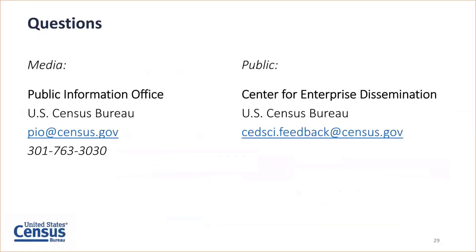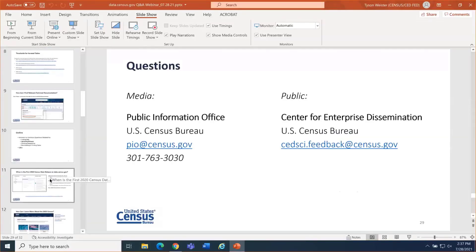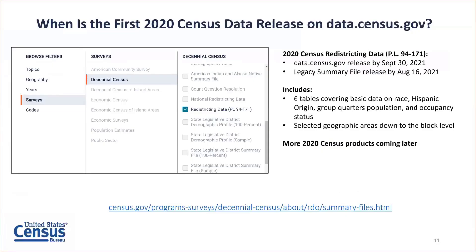Clarification on redistricting data release timing: the data will be released in legacy summary file format by August 16th. The same data will then be released on data.census.gov to make it easier for everyday users to access, and that will happen by September 30th.